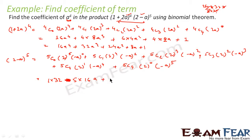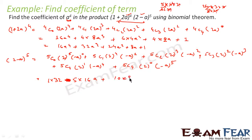Next, 5C2 = 5!/(2!·3!) = (5×4)/2 = 10. So 10 × 2³ × (−a)² = 10 × 8 × a² = 80a², which is positive since (−a)² = a².